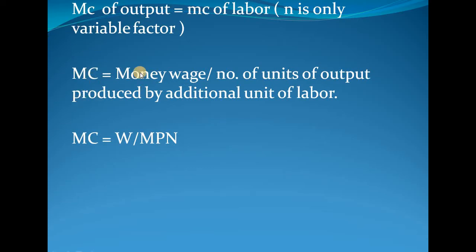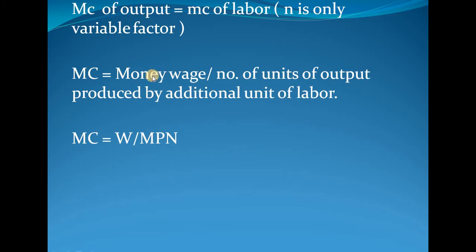Marginal cost equals money wage divided by the number of units of output produced by the additional unit of labor — that is, divided by the marginal product of labor. For example, if we hire a worker and pay her 100 rupees per hour, and by employing her we get two additional units of output, then those two units are her marginal product of labor.